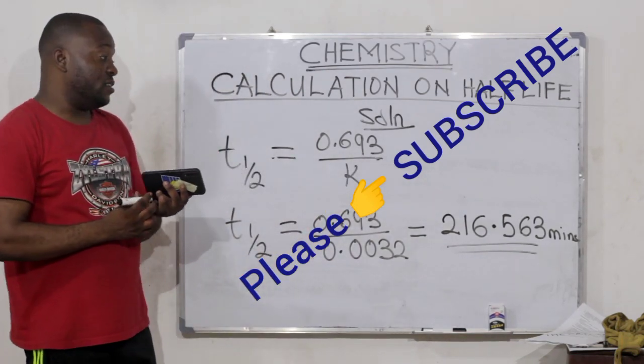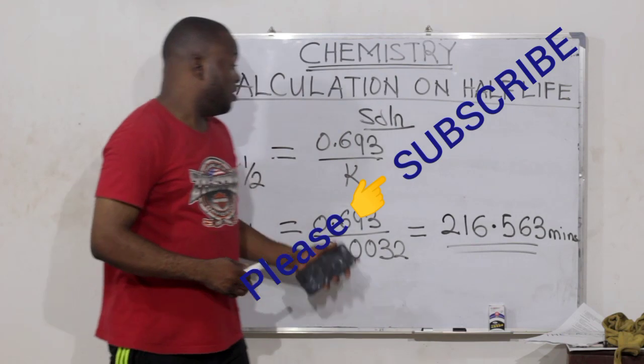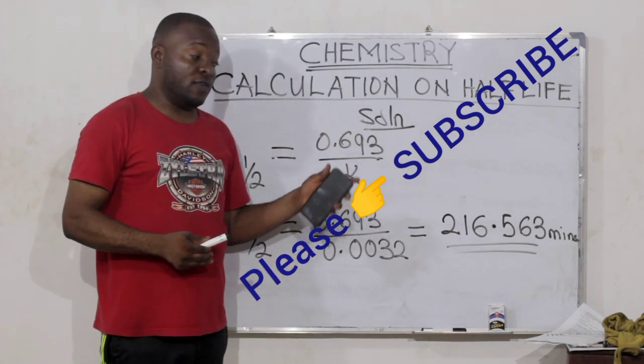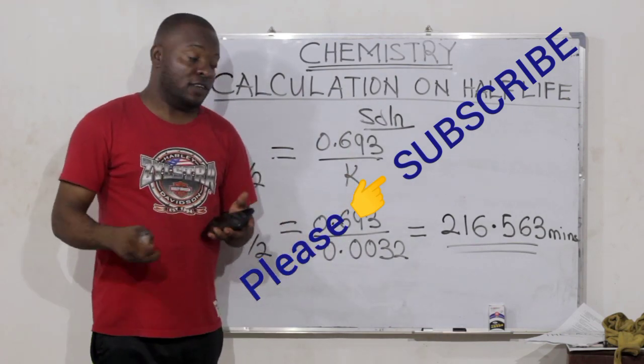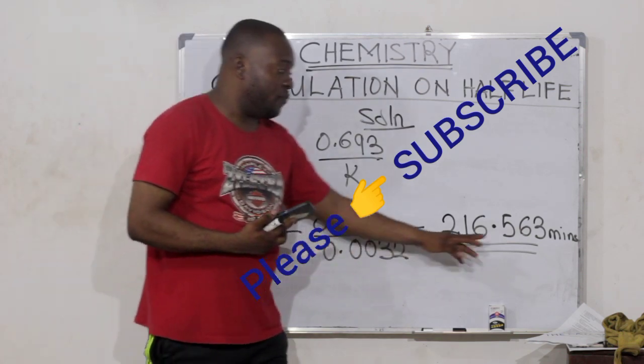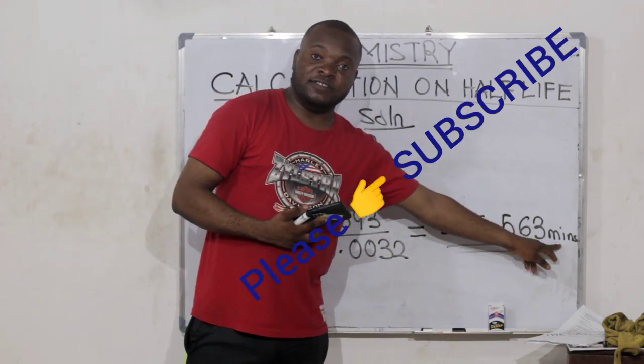Remember, the unit is minute because the decay constant was given in per minute. So half-life will now have the unit of minutes in this question.